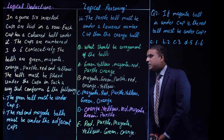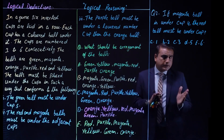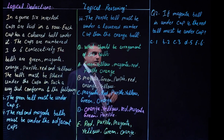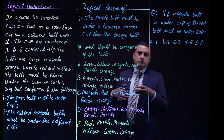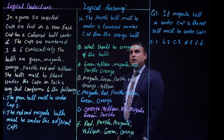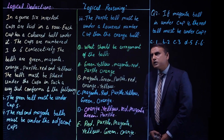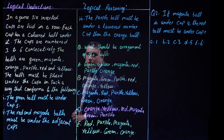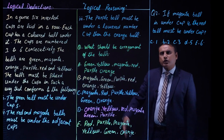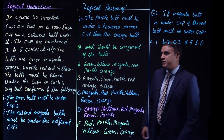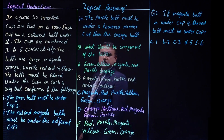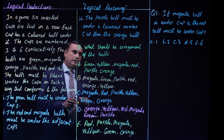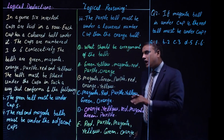The balls are green, magenta, purple, red, orange, and yellow. The balls must be placed under the cups in a way that confirms to the following conditions: the green ball must be under cup five; the red and magenta balls must be under adjacent cups; and the purple ball must be under a lower-numbered cup than the orange ball.